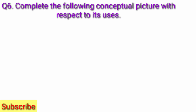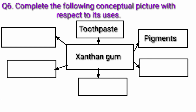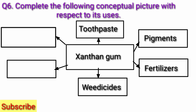Question 6. Complete the following conceptual picture with respect to its uses. Xanthan gum. Answer: Xanthan gum uses — toothpaste, pigments, fertilizers, herbicides, textile pigments, high-quality paper.